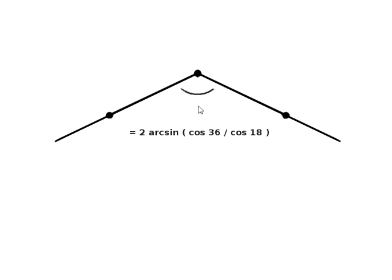This angle, it turns out to be only half of the full angle we want to know. So we just multiply that half angle by 2. 2 arcsine cosine 36 by cosine 18. And this is the formula that we wanted to derive.